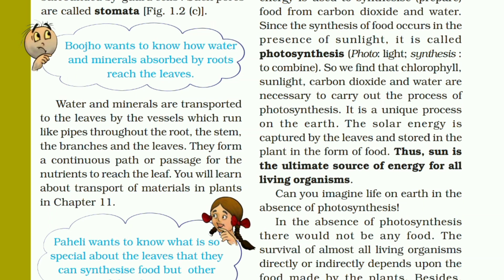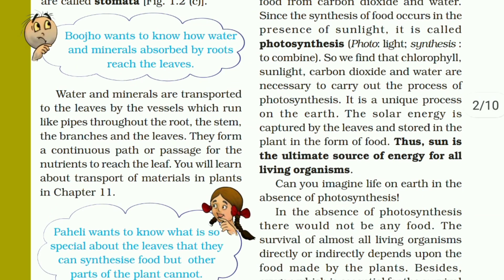We find that chlorophyll, sunlight, carbon dioxide, and water are necessary to carry out the process of photosynthesis. So what are the essential items for photosynthesis? Carbon dioxide, water, minerals, sunlight, and chlorophyll — all these things are necessary for photosynthesis.